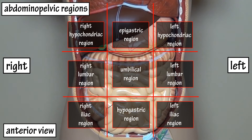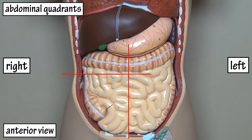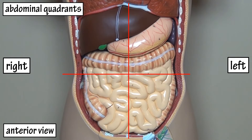Many professionals prefer to use a simpler map of regions to locate organs and abdominal pain. They section the area into four quadrants. Again, looking at the body from the anterior view will make right and left appear backwards, but these are named in reference to the body itself, not the viewer of the body.